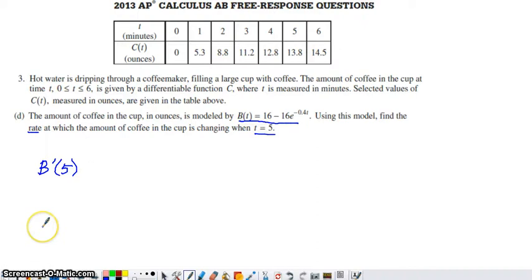And if we go ahead and first try to find B prime of t, the derivative of 16 is 0, and then I'm going to copy this constant into my derivative. So I have this constant factor of negative 16 that I'm copying in, and now I need the derivative of e to the negative 0.4t. Well, the derivative of a natural exponential is the same natural exponential.